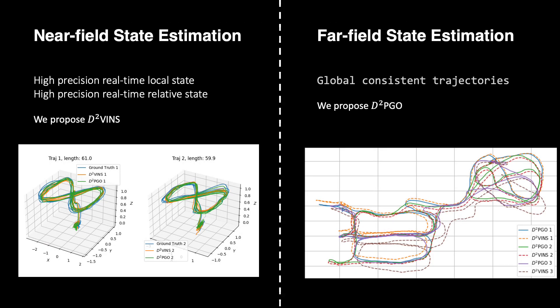D-Square SLAM is a combination of two parts, near-field state estimation and far-field state estimation. Near-field state estimation is estimating high-precision real-time local state and relative state between UAVs.